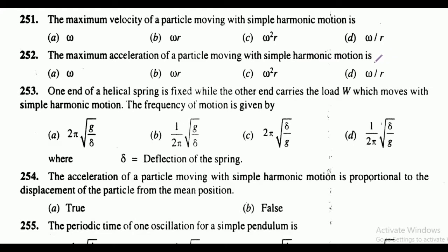The correct answer for question 251 is option B, that is omega r. Question 252: the maximum acceleration of a particle moving with simple harmonic motion. The correct answer is option C, that is omega square into r.